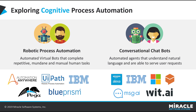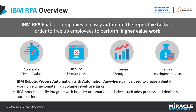IBM RPA automates repetitive tasks, freeing up employees to perform higher-value work. Previously it was called Automation Anywhere, but recently IBM merged with Automation Anywhere and released a new product called IBM RPA. It greatly reduces time and human error, increases speed of work, and reduces internal and external resources.